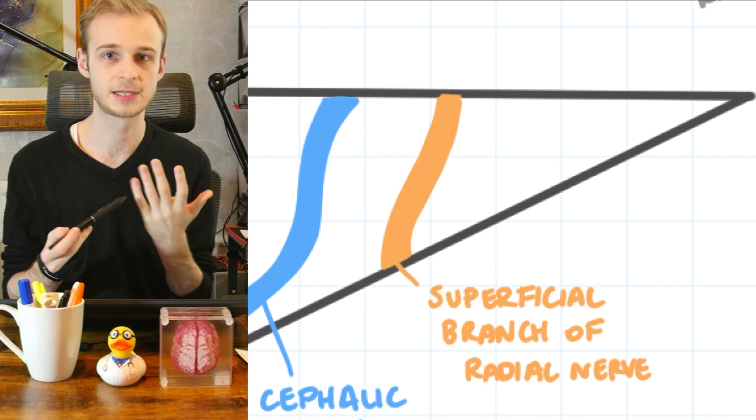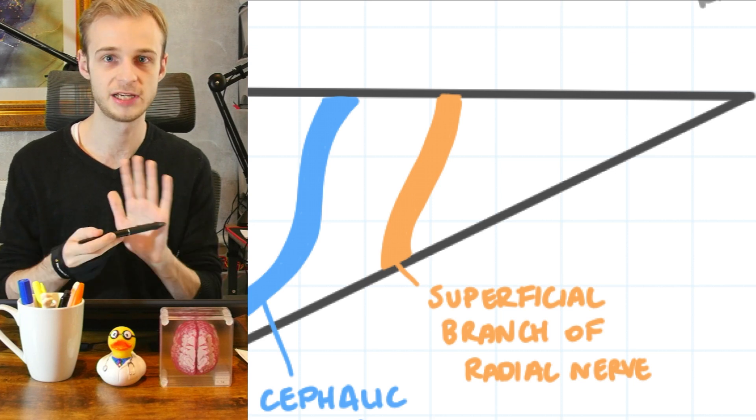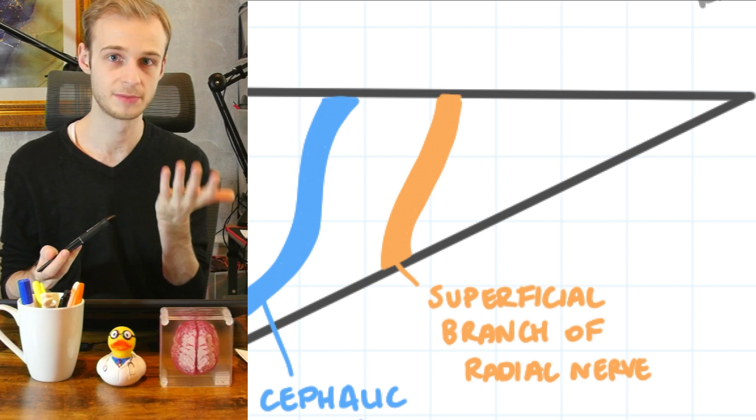It's almost analogous to what the median nerve supplies in the palmar aspect of the hand. And then finally, the ulnar nerve provides sensation to the last one and a half digits on both aspects, on the dorsum and the ventral surface.